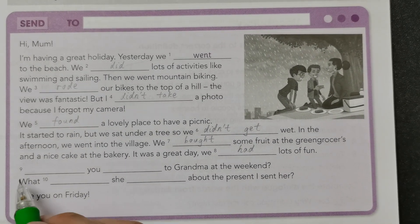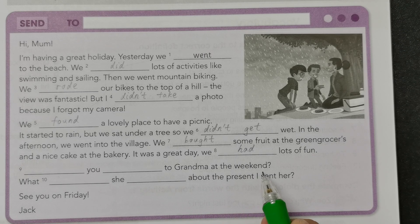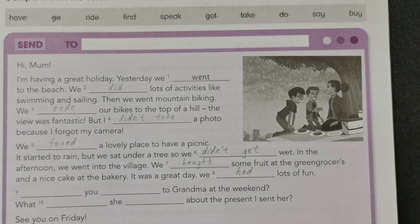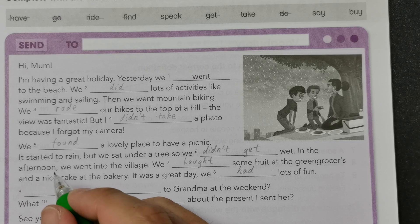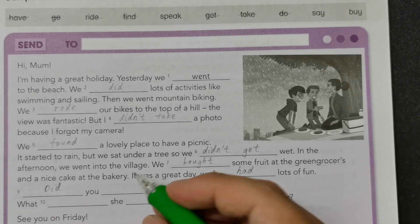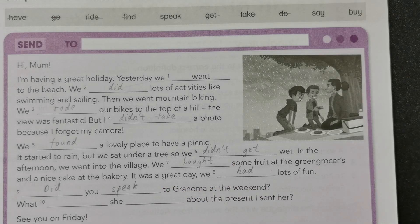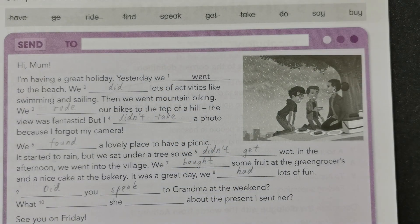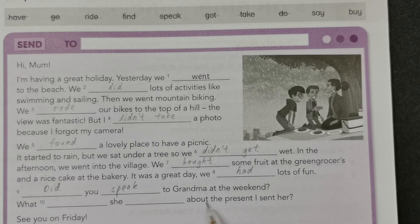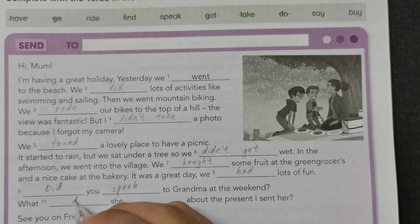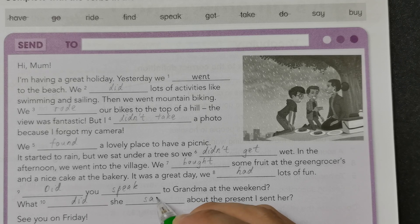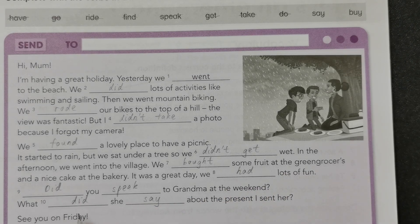So next, number nine: 'You to grandma at the weekend.' So this one is 'speak', and this is an interrogative form. So we use 'did': 'Did you speak to grandma at the weekend?' And then 'What she about?' — so this is 'say', in interrogative form: 'What did she say?' You need to use the base form of the verb, just like number nine. So: 'What did she say about the present I sent her?' See you on Friday.